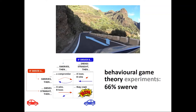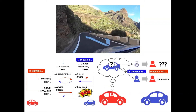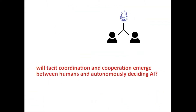The question we raise is: will people be willing to opt for this cooperative option — swerving — as much as they do with humans when they interact with artificial agents? So in this kind of story, if the other is a self-driving car that's empty, will people be willing to swerve and compromise with a machine as much as they are willing to swerve and compromise with another human?